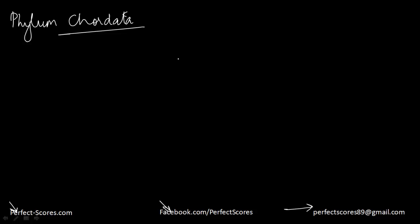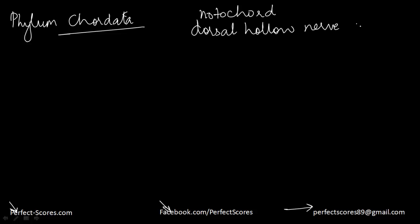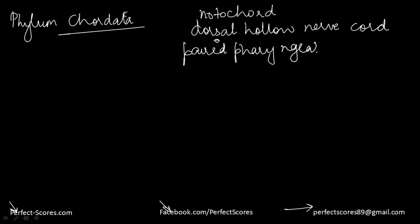The basic features of any animal belonging to phylum Chordata include the presence of a notochord, presence of a dorsal hollow nerve cord, and paired pharyngeal gill slits. These three features are an important composition of phylum Chordata.